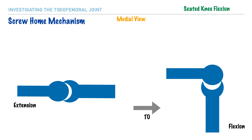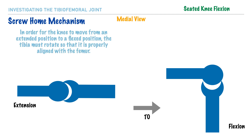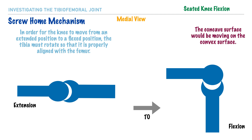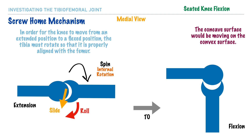If the individual returns their leg to a flexed position from full extension, the same arthrokinematic rule applies — the concave surface moves on the convex surface. In order for this to occur, the knee must unlock itself from its extended position. The tibia internally rotates, analogous to the spin arthrokinematic movement. The roll and slide movements again occur in the same direction as the action, in this case in a posterior direction.